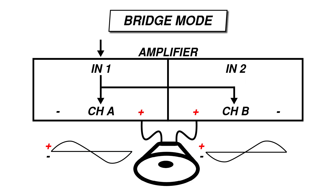In stereo or parallel mono mode, the negative terminal acts as a reference, and the positive terminal provides a series of positive and negative voltages relative to that. However, in bridge mono mode, both of these terminals will be actively contributing to the voltage. While the positive terminal on channel A creates a positive voltage, the positive terminal on channel B creates an equal negative voltage. This means that in bridge mono mode, you'll have double the voltage between the terminals than you would in stereo or in parallel mode.